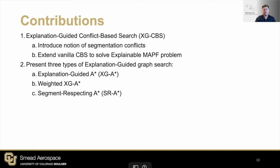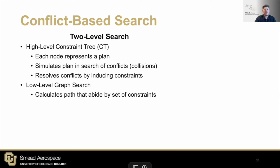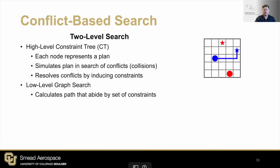Let's begin with a refresher of CBS. CBS is a two-level search consisting of a high-level constraint tree search and a low-level graph search. The high-level constraint tree keeps track of nodes where each node represents a plan which might have collisions, referred to as conflicts. Initially, a root node is obtained by using low-level graph search, typically A-star, to find the path for each agent from their start to their goal. Then, CBS picks an unexplored node from the tree, simulates the plan, and identifies any conflicts. Next, CBS attempts to resolve these conflicts by creating child nodes and adding constraints.